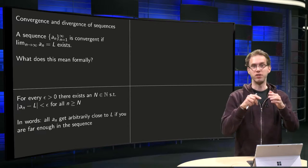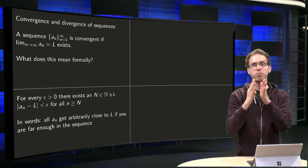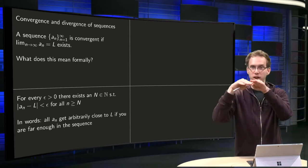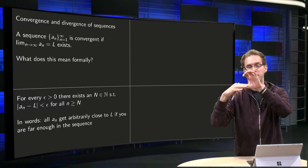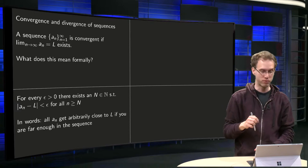So we have our sequence a_n. First it can jump around a bit, but at a certain point, from a certain n on, we have our L and all the elements of our sequence should get close to this L. It is written out formally as follows.